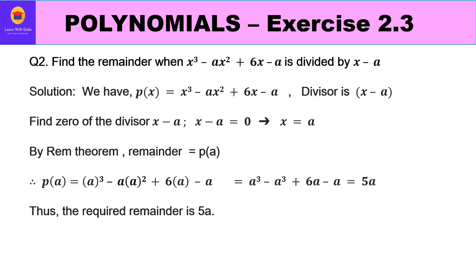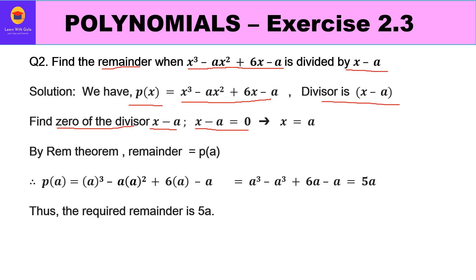The second question: find the remainder when x³ − ax² + 6x − a is divided by x − a. Let p(x) = x³ − ax² + 6x − a and the divisor be x − a. The zero of x − a is x = a. By the Remainder Theorem, the remainder is p(a): a³ − a(a²) + 6a − a = a³ − a³ + 6a − a. The a³ terms cancel, and 6a − a = 5a. So the remainder is 5a.